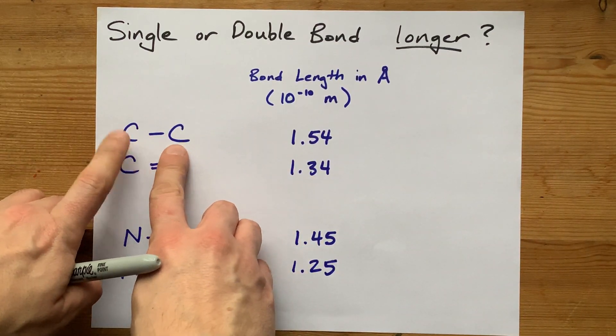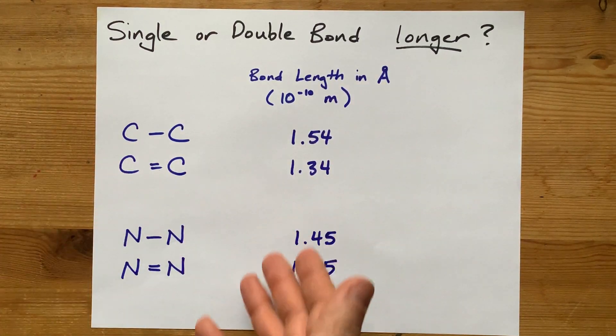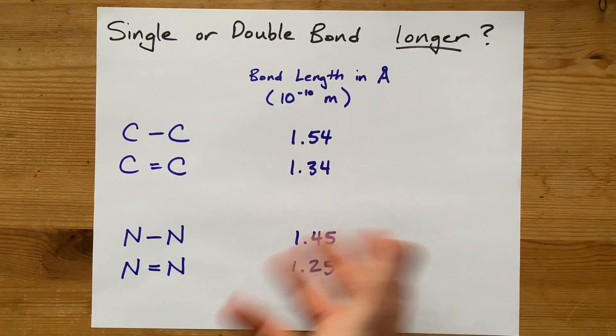Here I've got a single bond between two carbon atoms. On average, it's 1.54 angstroms. According to the data I have, the double bond is shorter, 1.34 angstroms.